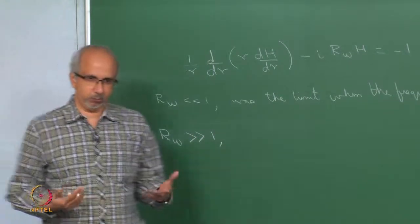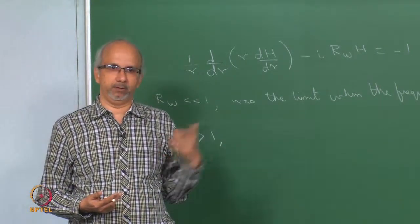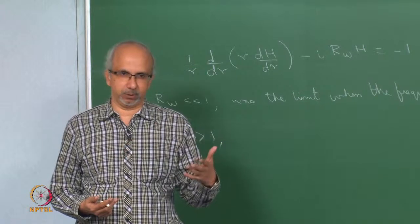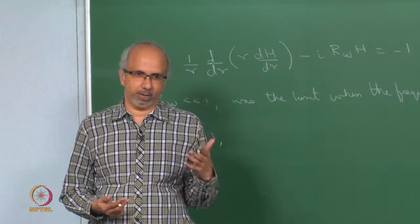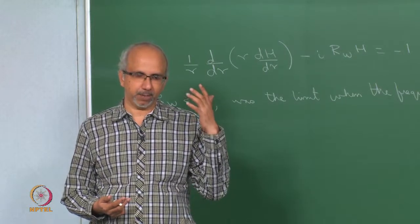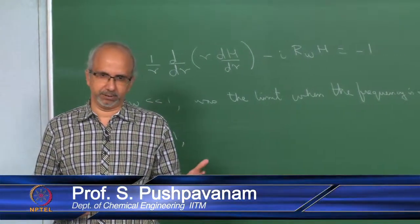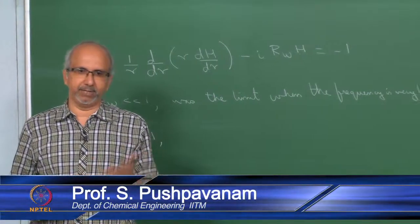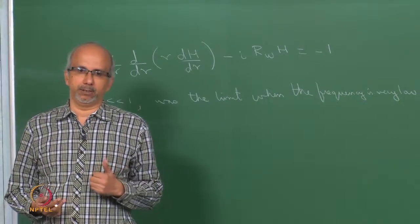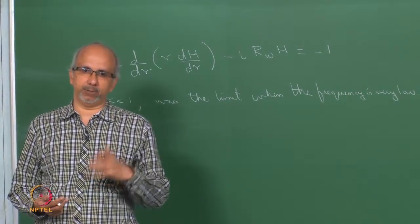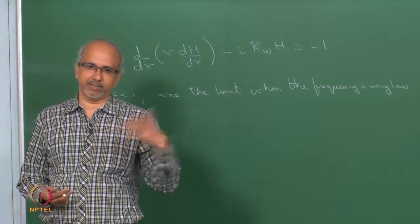You have two time scales. We looked at the one limit wherein when Rω is very much less than 1, the inertial terms are not significant — what you have is a balance between the viscous forces and the pressure term. We found that things were in phase: the velocity is in phase with the pressure. Now the question is what happens when the frequency is very large, when Rω is much greater than 1 — the other extreme.